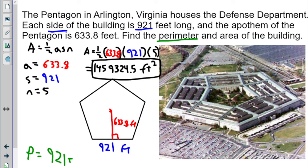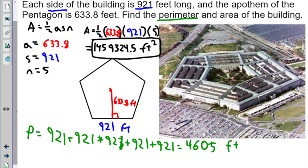Perimeter: add up all the sides and all the sides are 921. And how many of them are there? Five of them. So we have five times 921, which gives me 4,605. Feet squared? No. This time it's a perimeter, so it is a distance. It should be in feet.